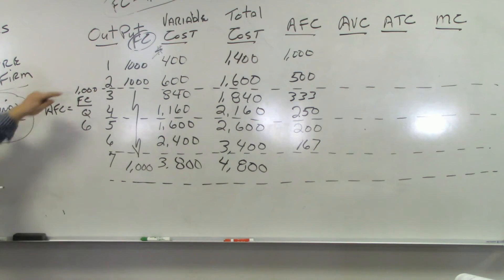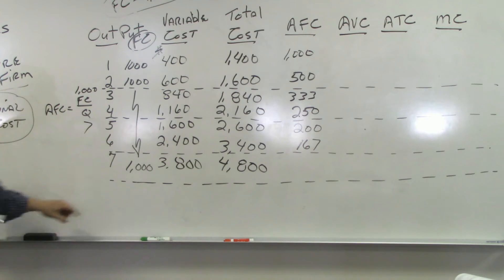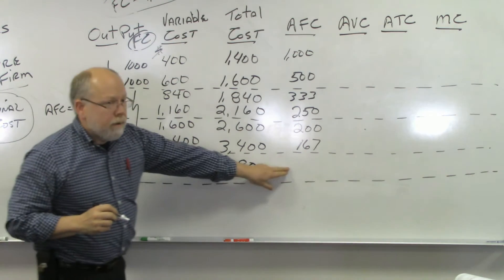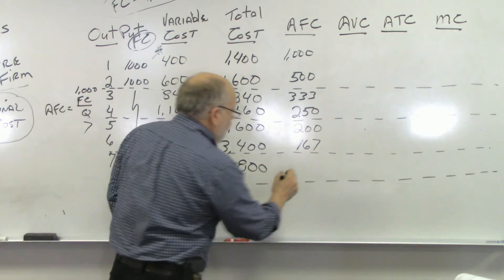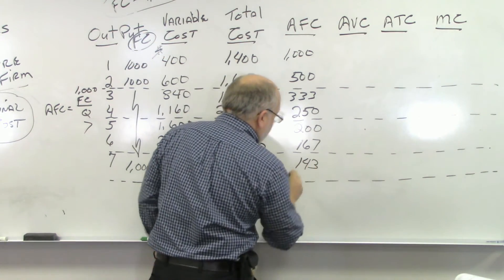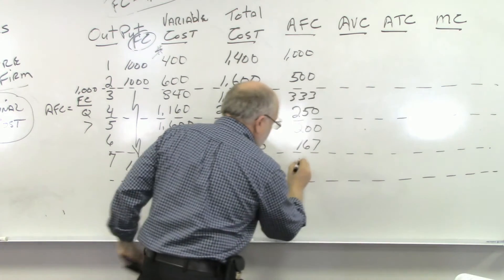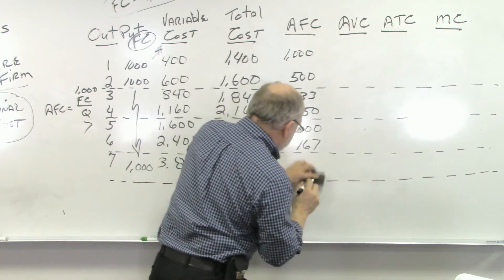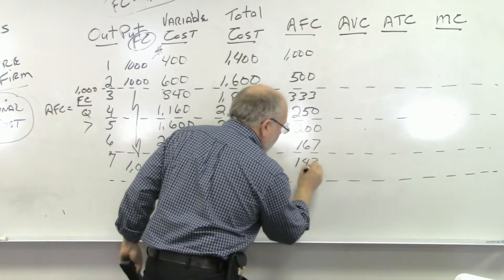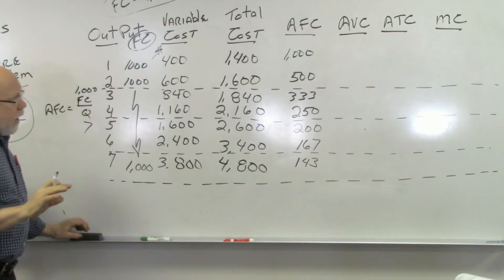One more: $1,000 divided by 7 gives us approximately $143. Now let me pause for a second. Remember our average fixed cost curve? It starts very high and as we increase output it drops like a stone — dropping $500 going from output 1 to output 2, then almost $200 from 2 to 3.